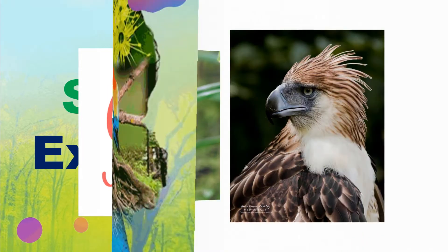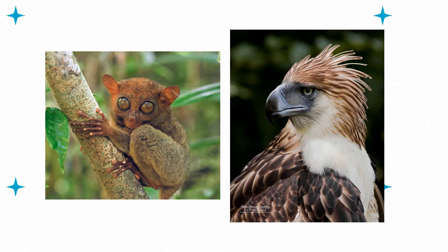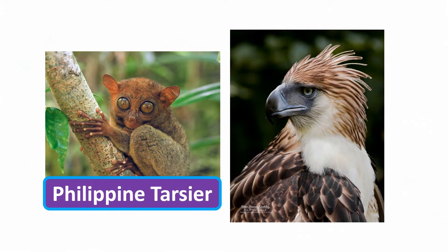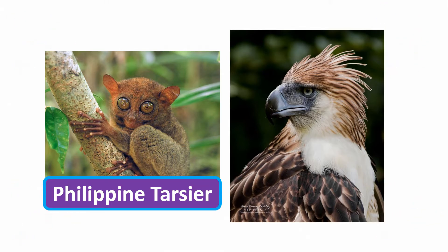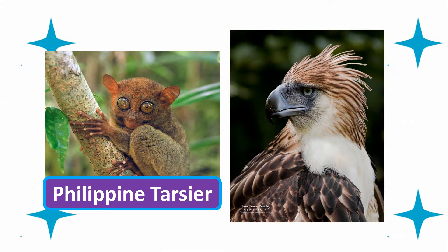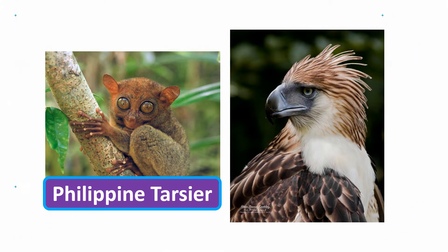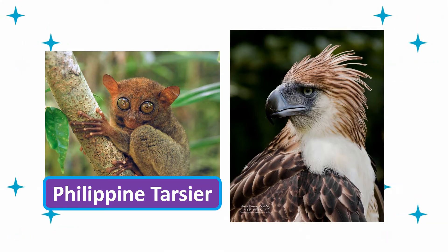Are you familiar with these animals? The animal on the left side of the screen is known as the Philippine Tarsier. Did you know that millions of years ago, tarsiers inhabited rainforests around the world, but now they exist on only a few islands in the Philippines, Borneo, and Indonesia? We are very lucky because in Bohol, the Philippine Tarsier was a common sight to behold in the southern part of the Philippine island.